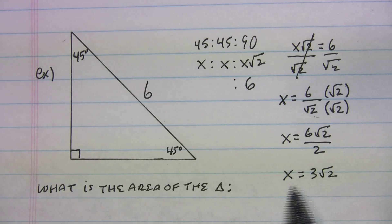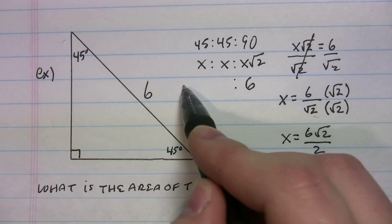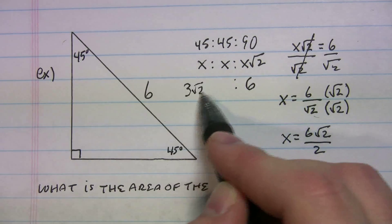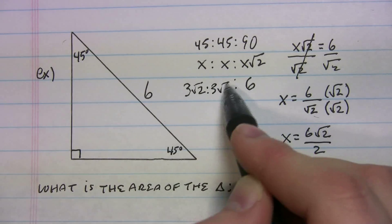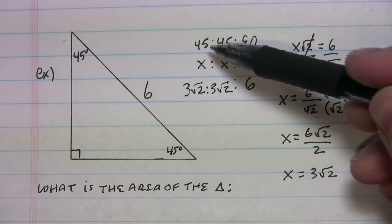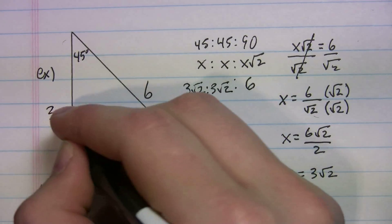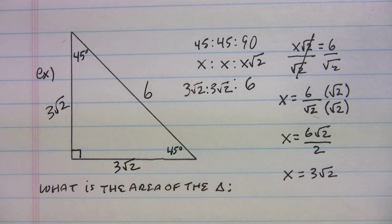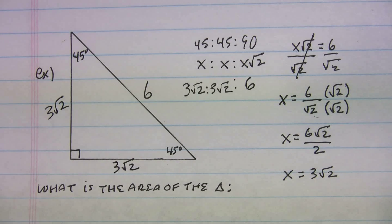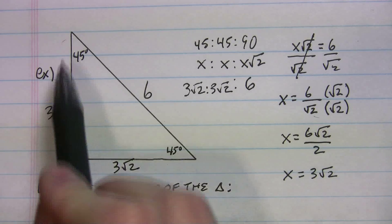Okay. So now that we have X, we can plug that back in. So that's going to be 3 radical 2. And that's going to be 3 radical 2. So that's telling me my sides opposite the 45 are 3 radical 2. Let's write that in. Okay. Now that I have that written in, I have to find the area. And I can do that now because I have the base and I have the height.